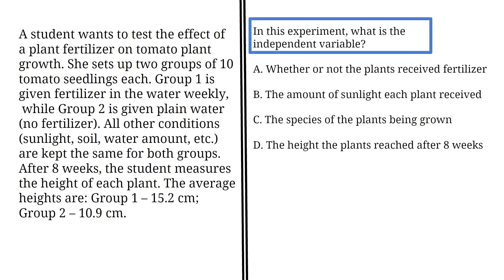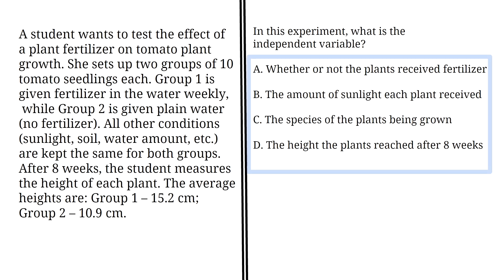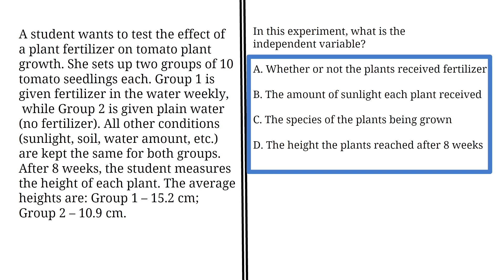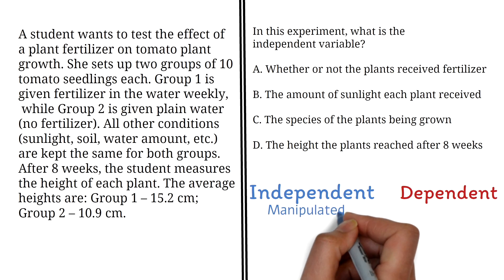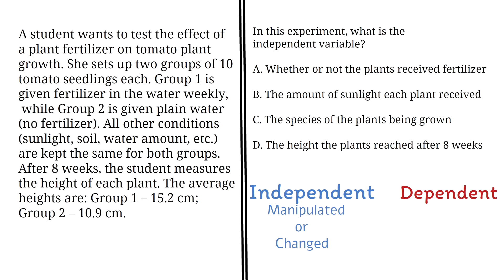In this experiment, what is the independent variable? To be good at this section of the GED, you must be able to identify the independent and dependent variables. Independent and dependent variables are used a lot in scientific investigations. The independent variable is the variable that is manipulated or changed in an experiment to see how it affects something else.